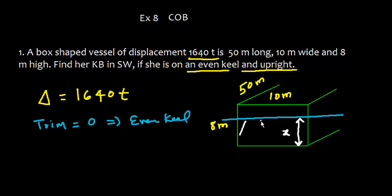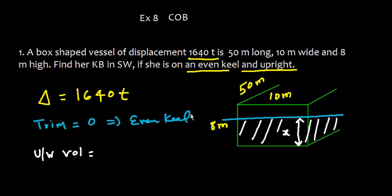If the draft is x, the underwater volume equals length × breadth × draft, that is 50 × 10 × x. The unit is meter × meter × meter, so the unit is cubic meters.